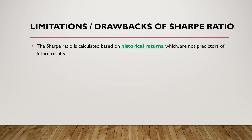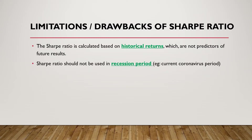A general guideline is that the Sharpe ratio should not be used during a recession period — for example, during the coronavirus period when many companies are experiencing a huge drop in stock prices. If you still want to use the Sharpe ratio during a recession, you should use comparable data from a similar period such as SARS. Furthermore, you may want to discount the SARS performance since the coronavirus period has been more severe.